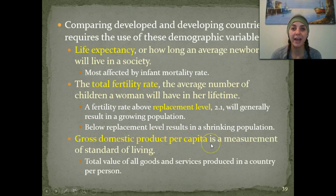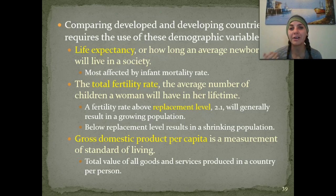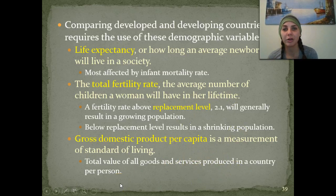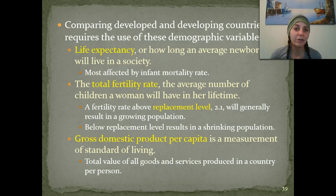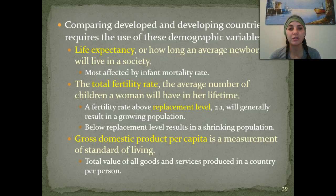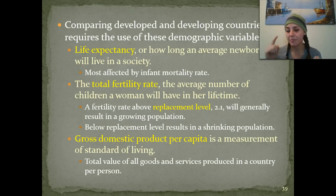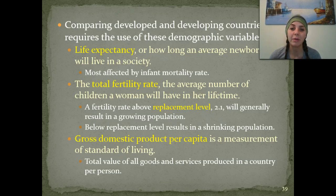The gross domestic product per capita is a measurement of standard of living. The higher the gross domestic product per capita typically means the higher the standard of living. This is the total value of all goods and services produced in a country per person — that doesn't mean your income. It can mean textile goods, agricultural crops, oil — the total value of all of these goods and services produced in the country you live in, divided per person.